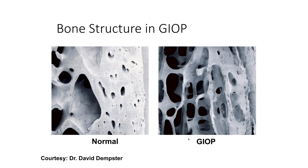When you look at what happens to the bone structure in glucocorticoids, as nicely shown by David Dempster years ago, there is both a thinning of the trabeculae and a dropout of the trabeculae, which we think adds to the bone becoming more fragile.